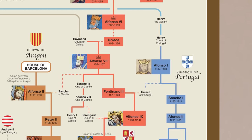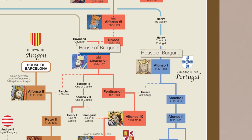One thing you'll notice very quickly looking at the first Portuguese king Alfonso I is that he reigned at the same time as the Spanish king Alfonso VII, and that above both of their names is the House of Burgundy. This is quite the coincidence, and I genuinely do mean that.